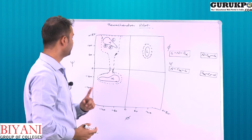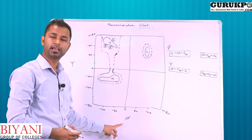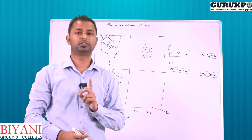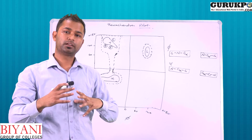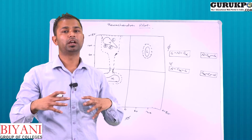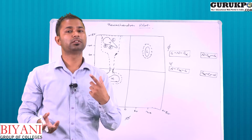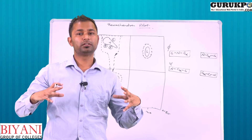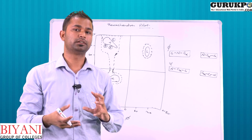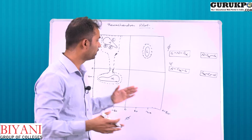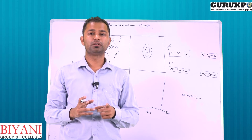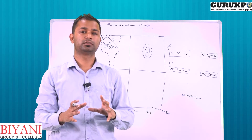The Ramachandran Plot is a plot between phi on the x-axis and psi on the y-axis. It tells us about the allowed and disallowed regions of atomic particles in the polypeptide chain due to their rotation. The protein has a dynamic structure due to the rotations of its constitutive atomic particles. The rotation around the peptide bond is restricted.